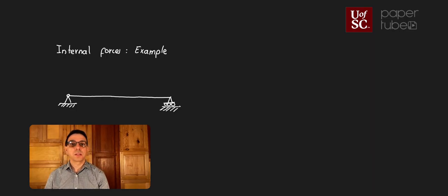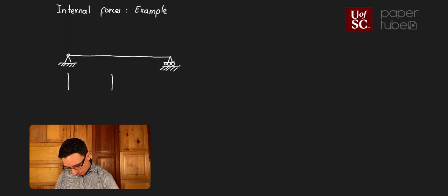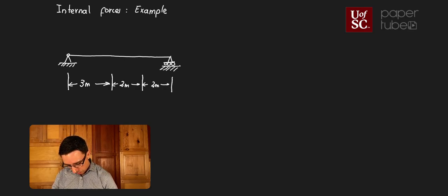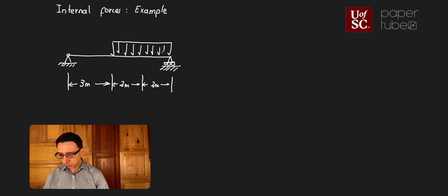We're going to look at those shear and bending diagrams later in another video. For now, we're going to calculate the internal forces at a particular point. In this case, we're going to have the beam divided into different parts: 3 meters, then 2 meters, then another 2 meters. We're going to have a distributed force applied on this part of the structure with a magnitude of 1.5 kilonewtons per meter.